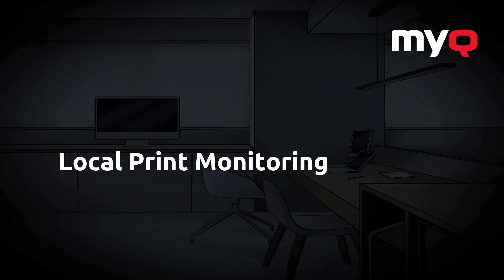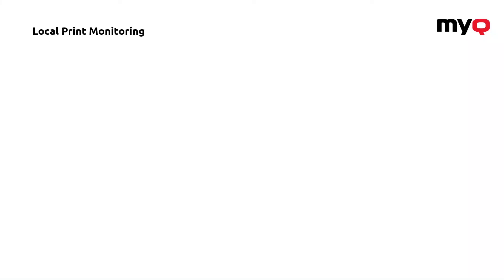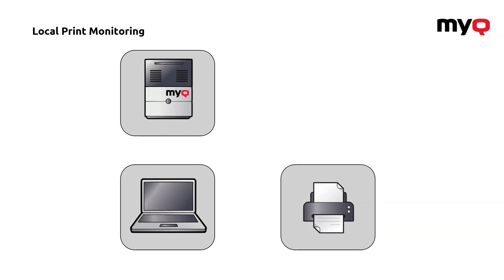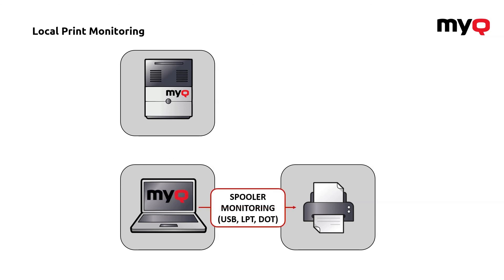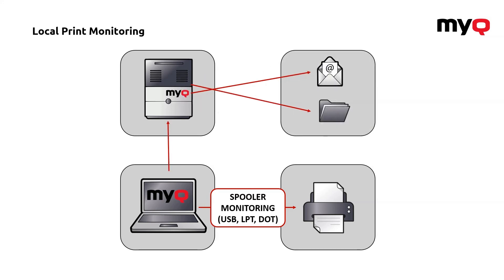Another feature this application provides is local print monitoring — a solution for someone using machines connected through USB ports. When the application is installed on your laptop or computer, it automatically checks your spooler using standard USB, LPT, and dot ports. Importantly, it only checks the spooler, so there is no real feedback from the machine — the information may not be as precise as standard network printing. On the other hand, you get an estimate of how much the machine is used and how many pages were printed, based on the amount of pages spooled. The application collects all data and reports it to the server for reporting.